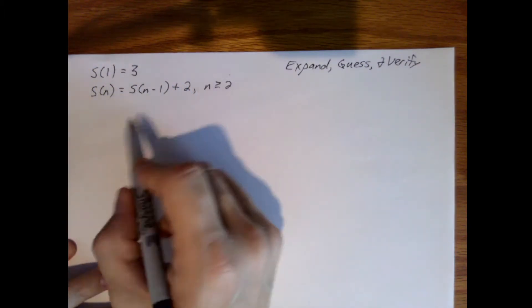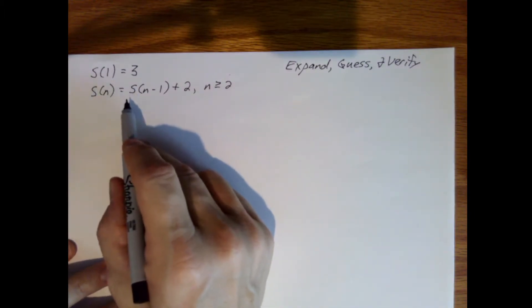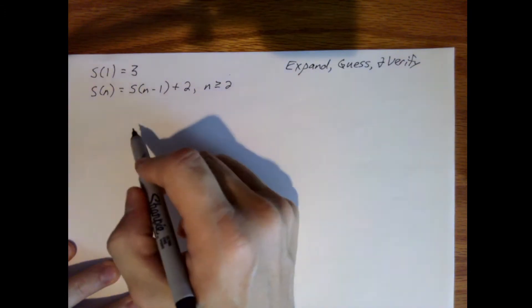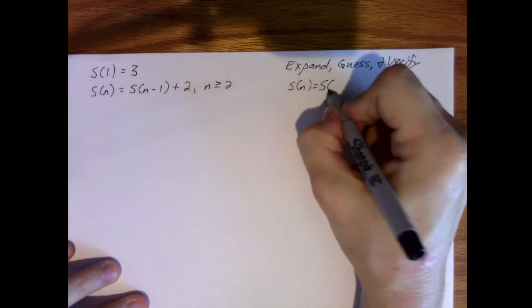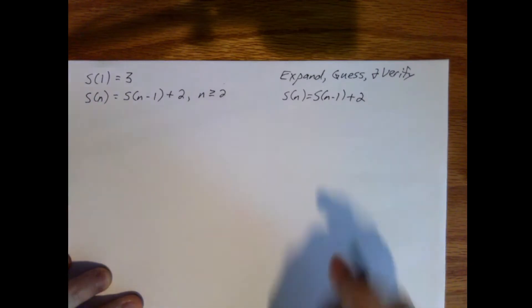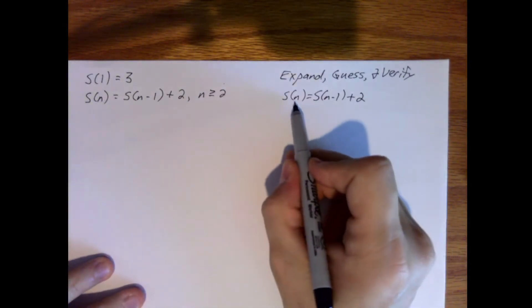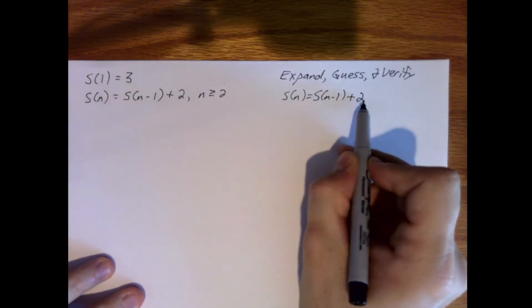Before we see how to solve this — which is where we produce a closed-form solution — let's sketch out a few things that would be helpful to understand the process. You wouldn't normally do this, but I'm doing this so the process will appear less magical. So if we have s of n equals s of n minus 1 plus 2, what this means in English is that the current value is equal to the previous value plus 2.